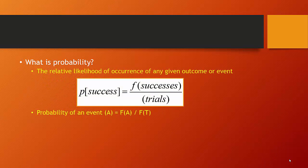To begin with, what we want to do is understand what probability is. Probability is the relative likelihood of an occurrence of any given outcome or any given event. You can imagine the probability of an event being the likelihood of observing such an event over the total number of trials.